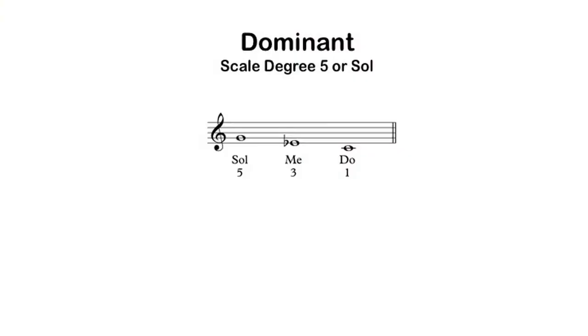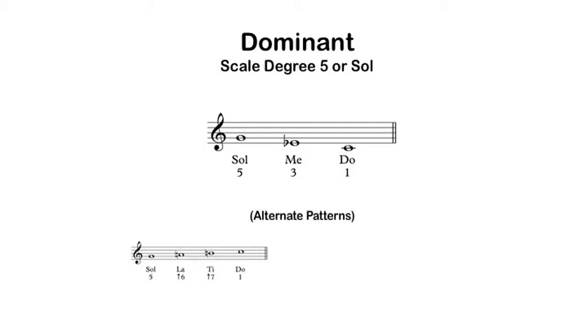Now let's move on to patterns that are similar to their counterparts in the major mode — same shape and same scale degrees, but inflected to make it minor. The first is the pattern for the dominant or scale degree 5: SOL, ME, DO. The dominant has two alternate patterns. The first goes up the scale — identical to the first alternate pattern from the major mode: SOL, LA, TI, DO. The second simply jumps up from 5 to 1: SOL, DO — again identical to the second alternate pattern from the major mode.